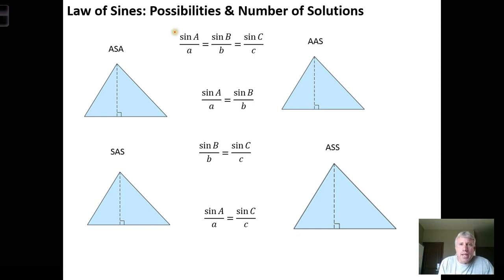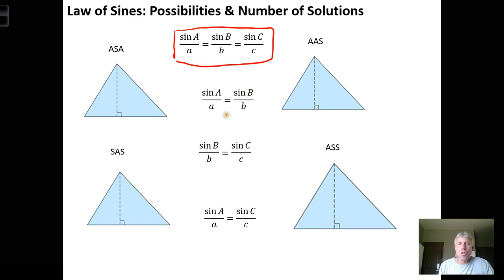The law of sines gives you three ratios. You select any two of the possible combinations of ratios and use those to solve for a missing side or a missing angle. You pick two ratios and use that to solve for a missing piece of a triangle.